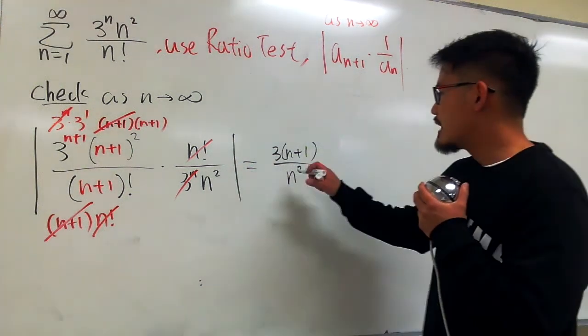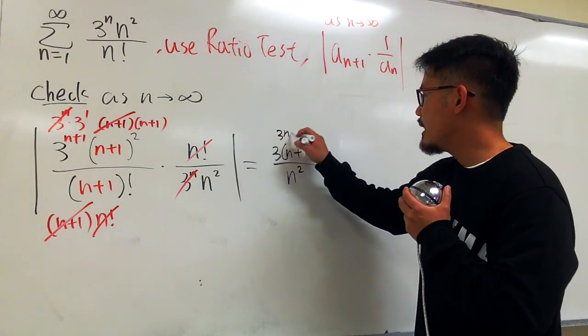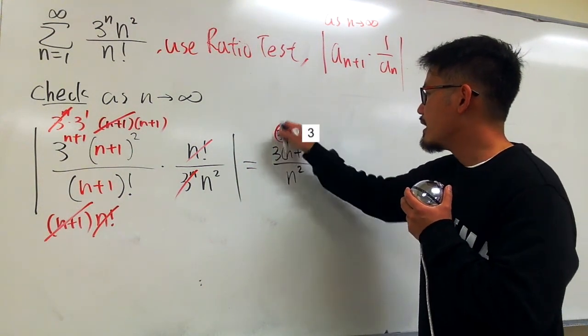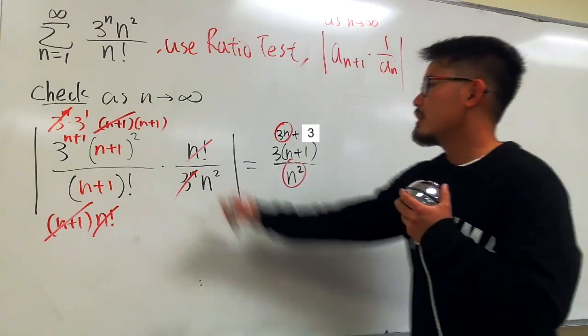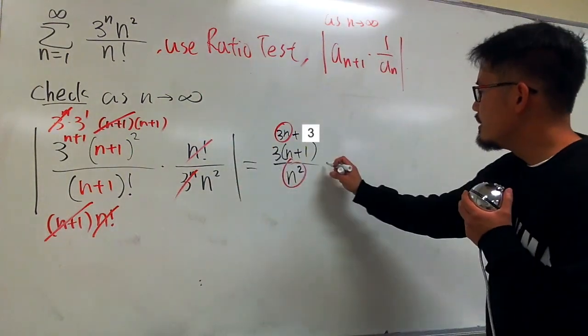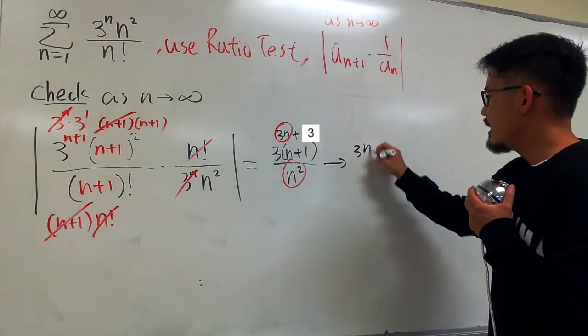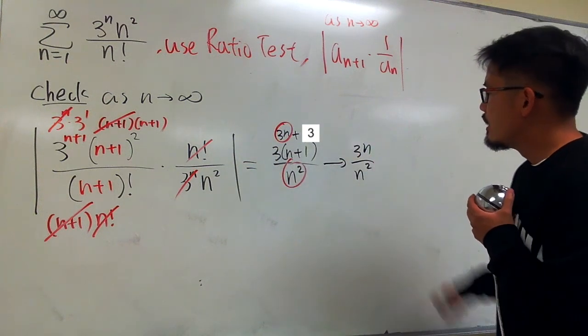Now we are ready to take the limit. On the top, we have 3n plus 3. And you see that 3n over n, that's all we care, right? As n goes to infinity, this will approach 3n over n squared. Reduce the power,